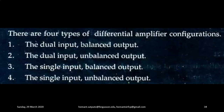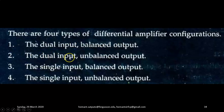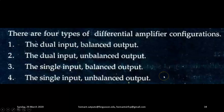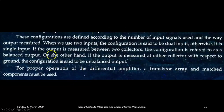There are four types of differential amplifier configurations. Number one: dual input, balanced output — that means dual input, dual output. Second: dual input, unbalanced output or single output. Third: single input, balanced output. And fourth: single input, unbalanced output. Let's take a quick look at each one of them.